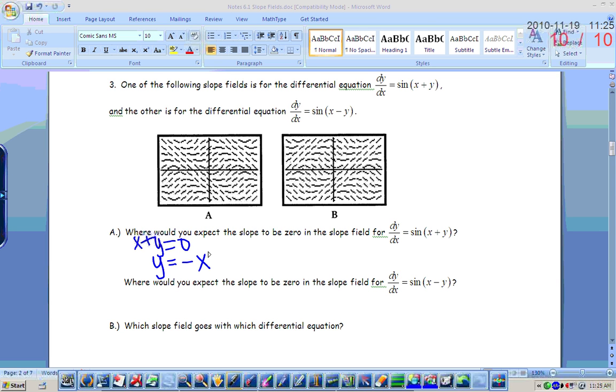So we need x plus y to equal zero or we need for the y value to equal the negative of the x value. So any time, any point where y is the negative of x value, I should expect to have a slope of zero. Where would you expect the slope to be zero on the other equation? Right, where y equals x or where that argument x minus y equals zero. So which slope field goes with which differential equation? Let's do the sine x plus y first. So x plus y, y equals negative x, needs to equal zero.